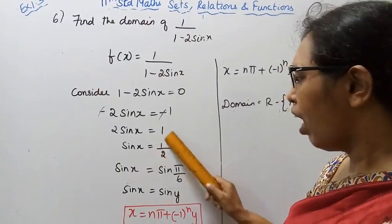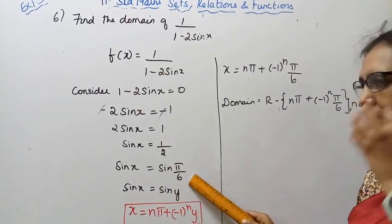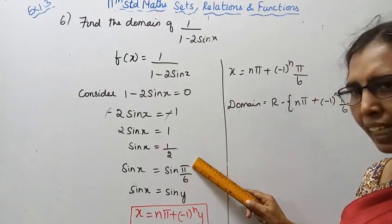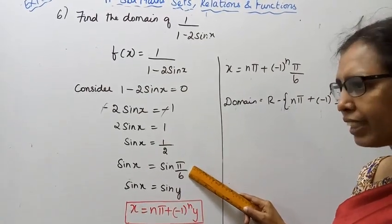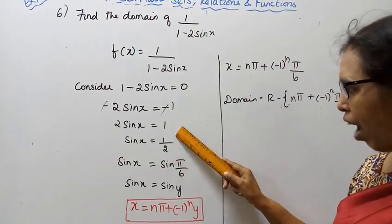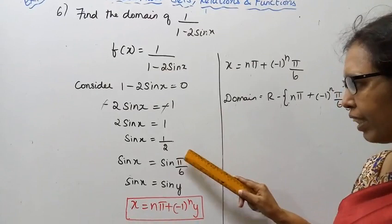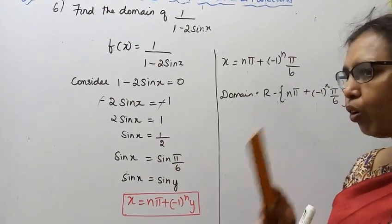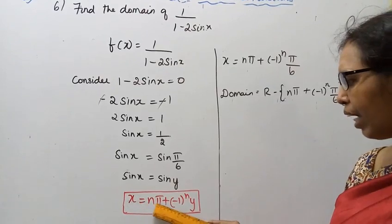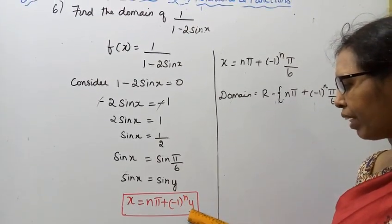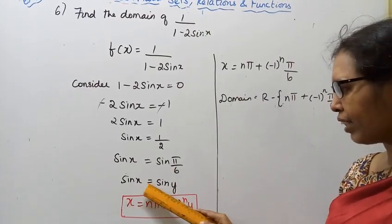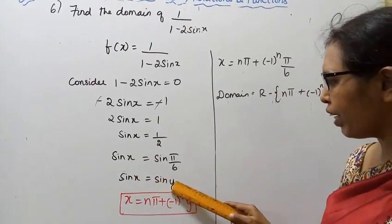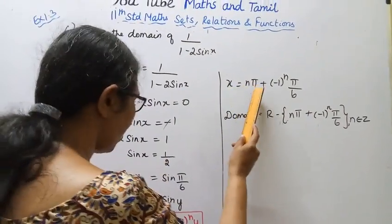Sin x equal to 1 by 2, which means sin x equal to sin(π/6). Using the formula: if sin x equal to sin y, then x equal to nπ ± (−1)^n · y. Here y = π/6, so x = nπ ± (−1)^n · (π/6).